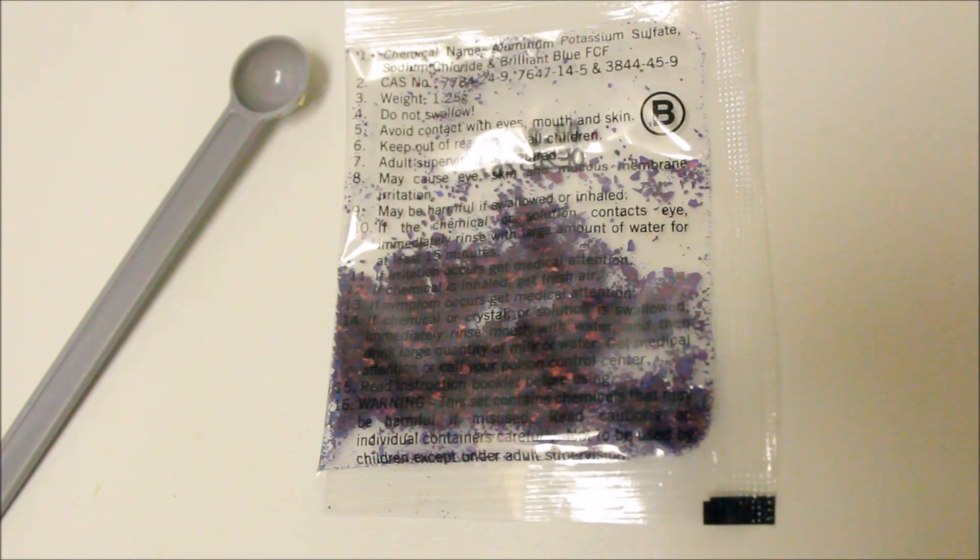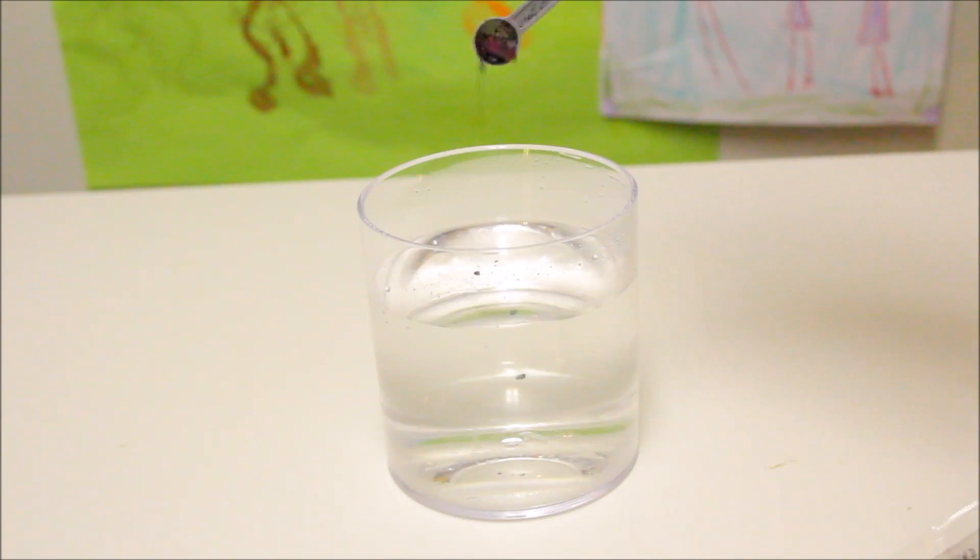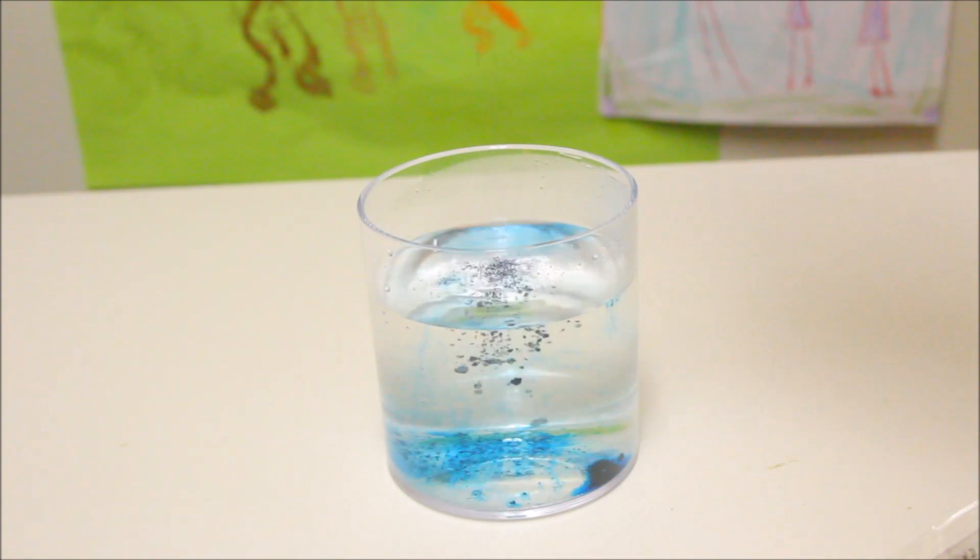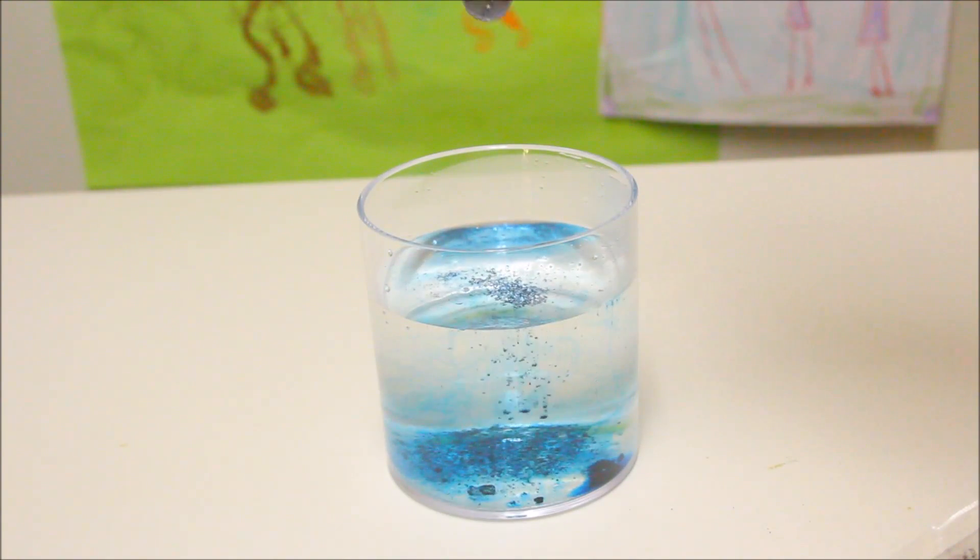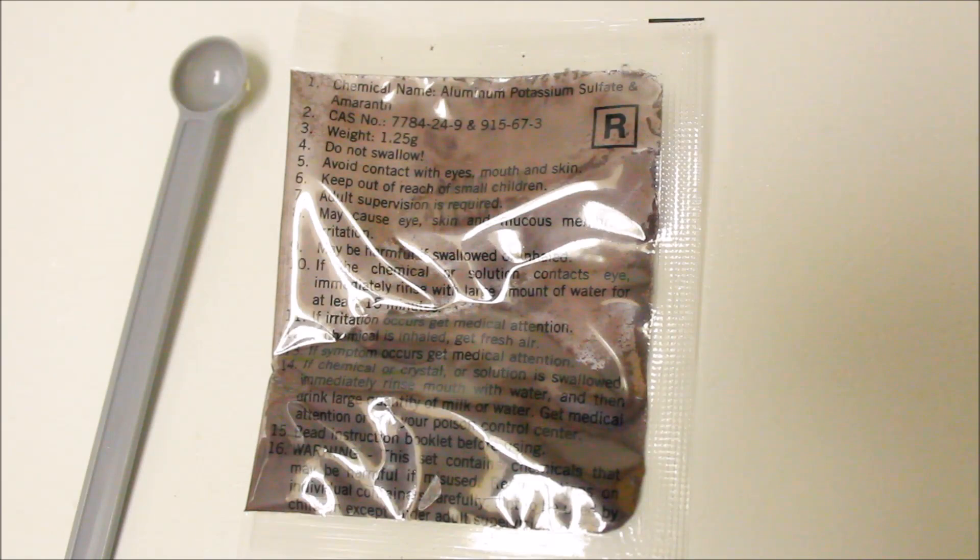To make dark purple crystals, we need to sprinkle two spoonfuls of blue seedings and two scoops of the red seeding!